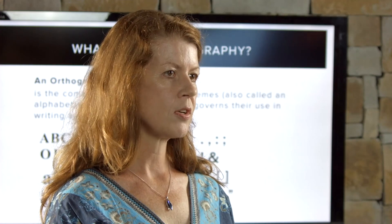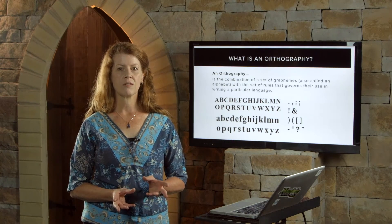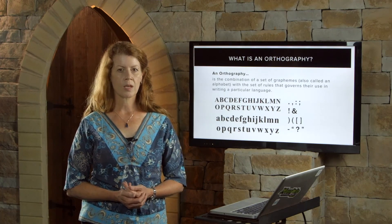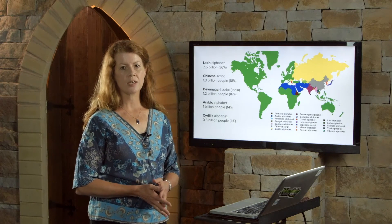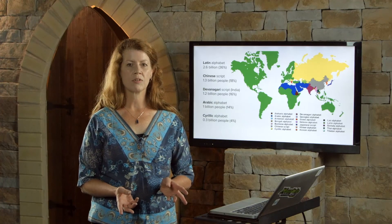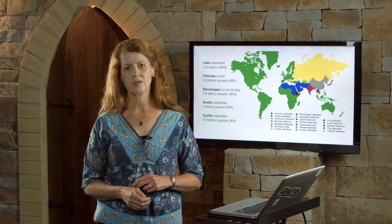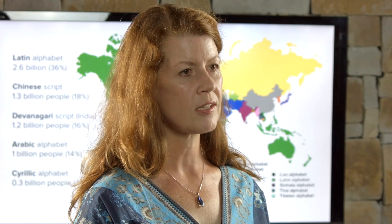Many other languages also use the Latin alphabet, and various notations, diacritics and other things are used to represent necessary features of the particular language being written. This map shows the major writing systems used in the world. The main ones are Latin, Cyrillic, Arabic, and the Asian logographic scripts like Chinese, where units of meaning are depicted rather than sounds. Each of these writing systems is used to represent many different languages — the Cyrillic script used to write Russian is also used for around 100 other languages, the Chinese script is used to write Japanese and other languages, and Arabic is used for more than 40 separate languages.